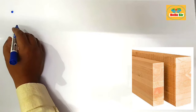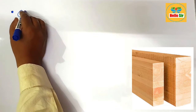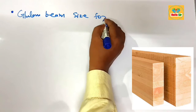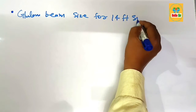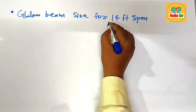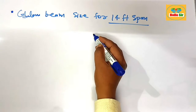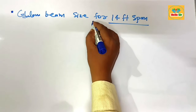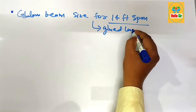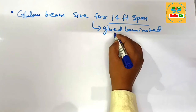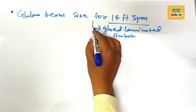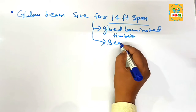In this video we'll learn about glulam beam size for a 14-foot span — what size glulam beam is required for a 14-foot span. First, understand what a glulam beam is: it is glue laminated timber, made by sandwiching multiple layers of thin sheets of wood with adhesive material, and it is used as a beam and header in building construction.